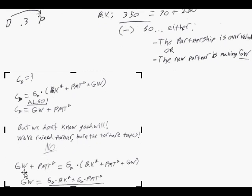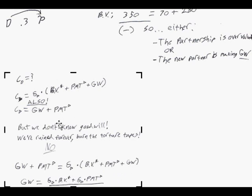If you set this equal to this, you get: goodwill plus payment equals the share of Danville, 0.3, times book value, and so on. We just set these two equations equal to each other, and what we're going to do is solve for goodwill. Then we can figure out what Danville's capital balance is.